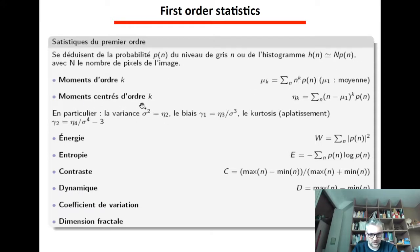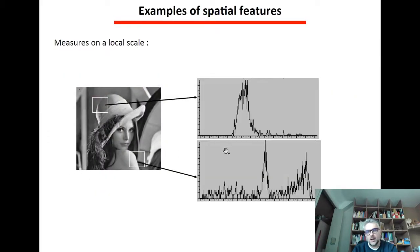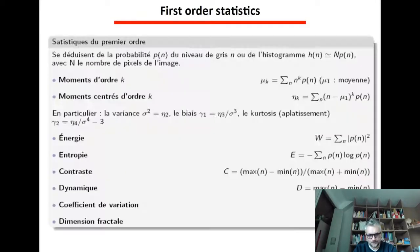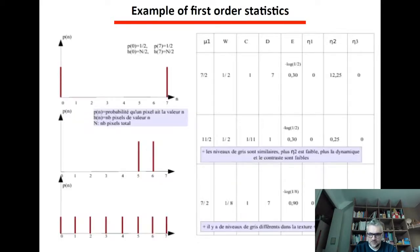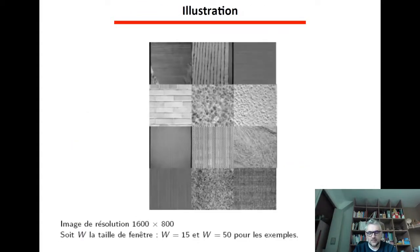So again these statistics can be computed with the convolution and here I give you a list of what can be computed. There are many of them, centered moments of order k which includes the average or which includes the variance for centered moment of order k equal to 2 and other stuff which basically will sum up the shape of the histogram in a single scalar.